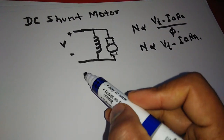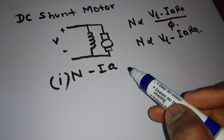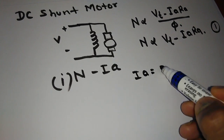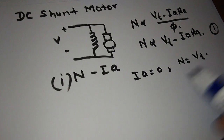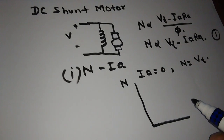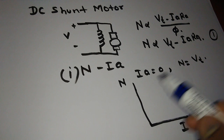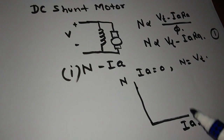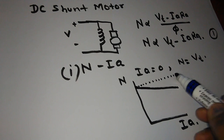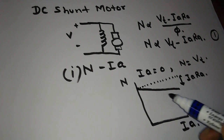The first plot will be speed versus armature current. We can plot this characteristic using the speed equation. When Ia is equal to zero, speed is maximum. As we increase the armature current, speed drops. So this is the characteristic we will get — this is the ideal speed. This drop is due to IaRa drop, and this characteristic is known as a drooping characteristic.